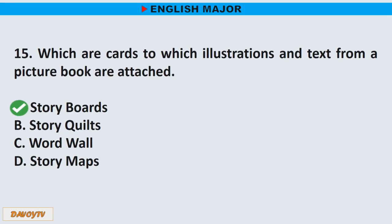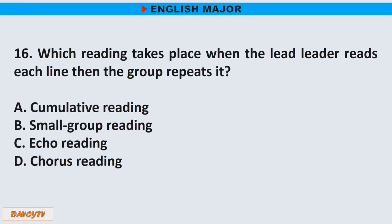Question number 16. Which reading takes place when the lead reader reads each line, then the group repeats it? A. Cumulative reading. B. Small group reading. C. Echo reading. D. Chorus reading. The correct answer is letter C. Echo reading.